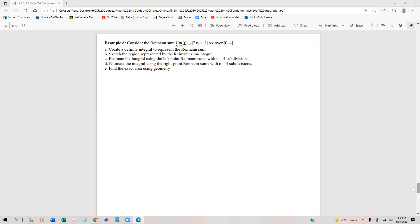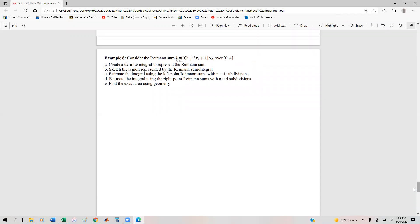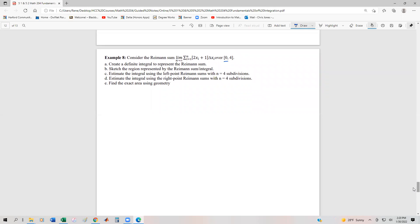So pretty much everything we've done in this section. First things first, the easiest part: create a definite integral. Our lower bound is 0 and our upper bound is 4, so we have the integral from 0 to 4 of (2x+1) dx.